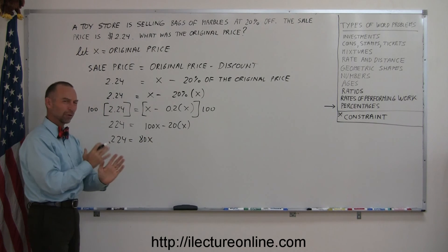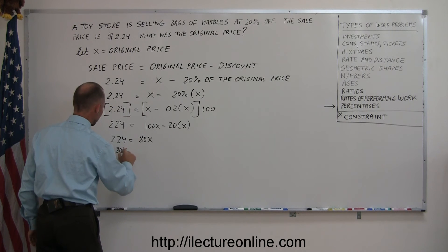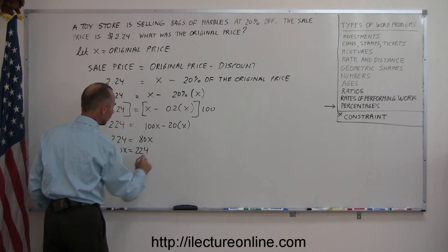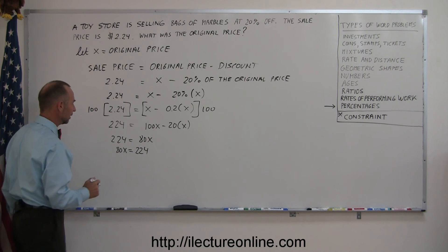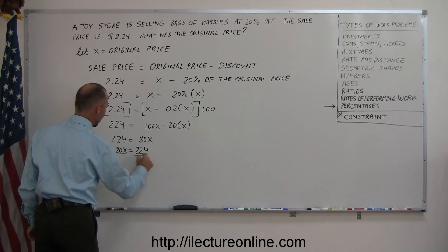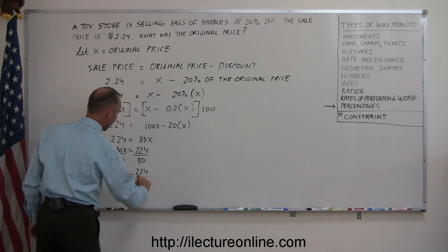I like to reverse these because I like to put 80X on left side, 224 on the right side, so that's 80X equals 224. I don't need to change the sign here because I just simply flipped the equation over, and now I can divide both sides by 80, and so I get X equals 224 divided by 80.